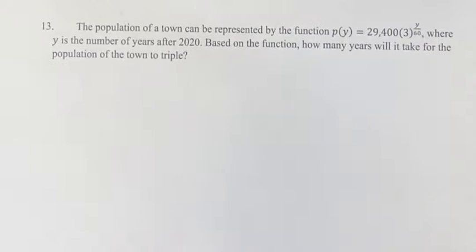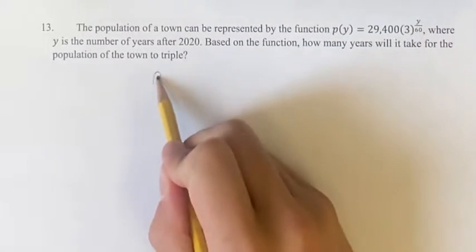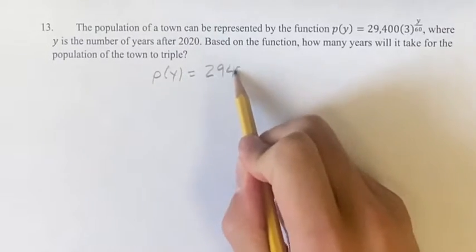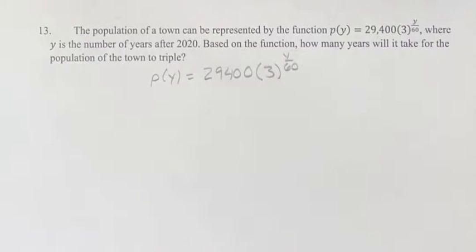Hello and welcome back to another video. In this problem we have the population of a town represented by this equation: p(y) = 29,400(3)^(y/60). Now we're asked how many years will it take for the population to triple?